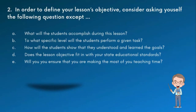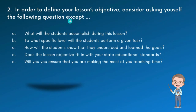Number two: in order to define your lesson's objective, consider asking yourself the following questions — EXCEPT. Hati-hati ada kata 'except' — kecuali. Terkadang kalau kita membacanya terlalu cepat kita lupa. Untuk mendefinisikan tujuan pembelajaran, kita lihat dulu pilihan A: 'What will the student accomplish during the lesson?' — ini diterima, ini tujuan yang ingin dicapai.